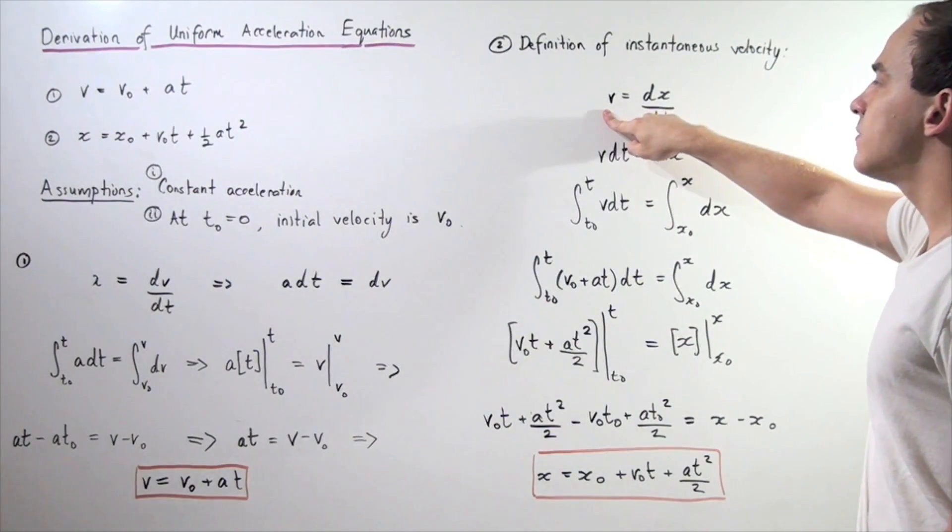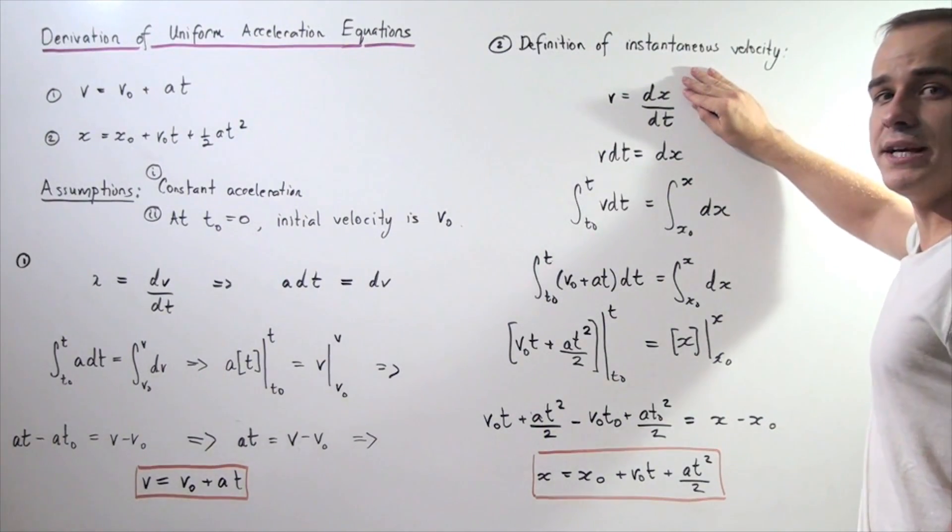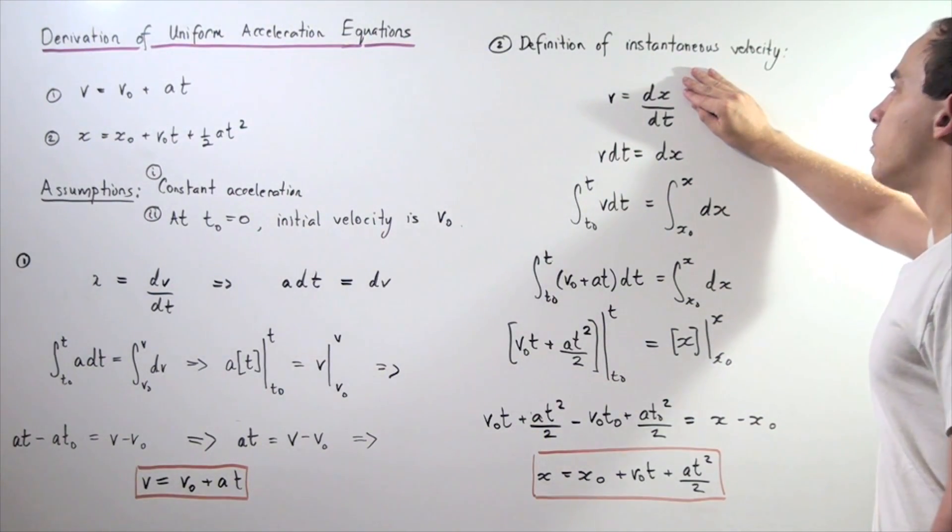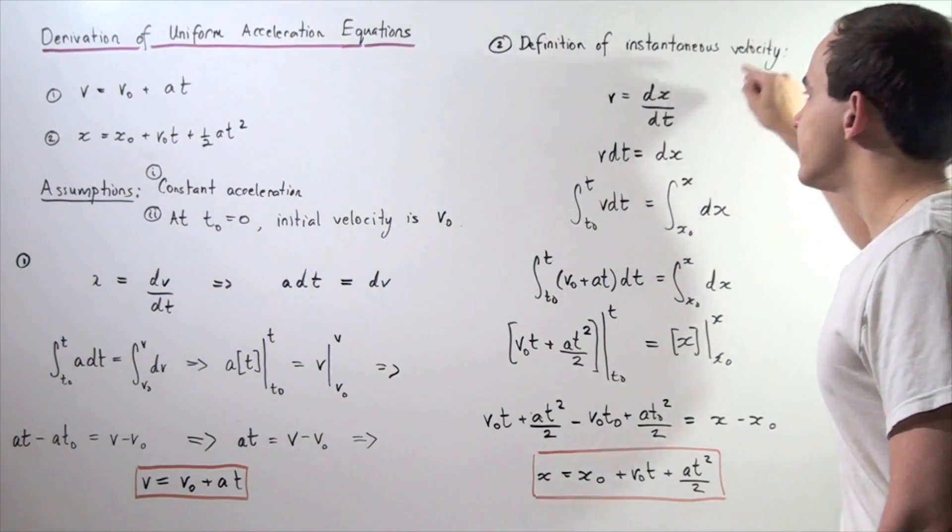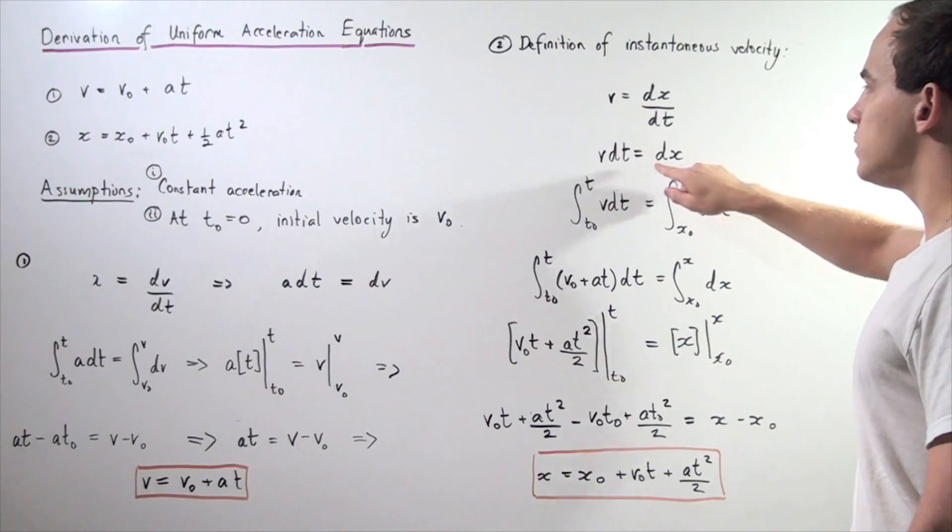Instantaneous velocity or simply velocity is equal to the derivative of our displacement function with respect to time. So once again, let's begin by bringing our dt over to the velocity side. We have velocity times dt equals dx.